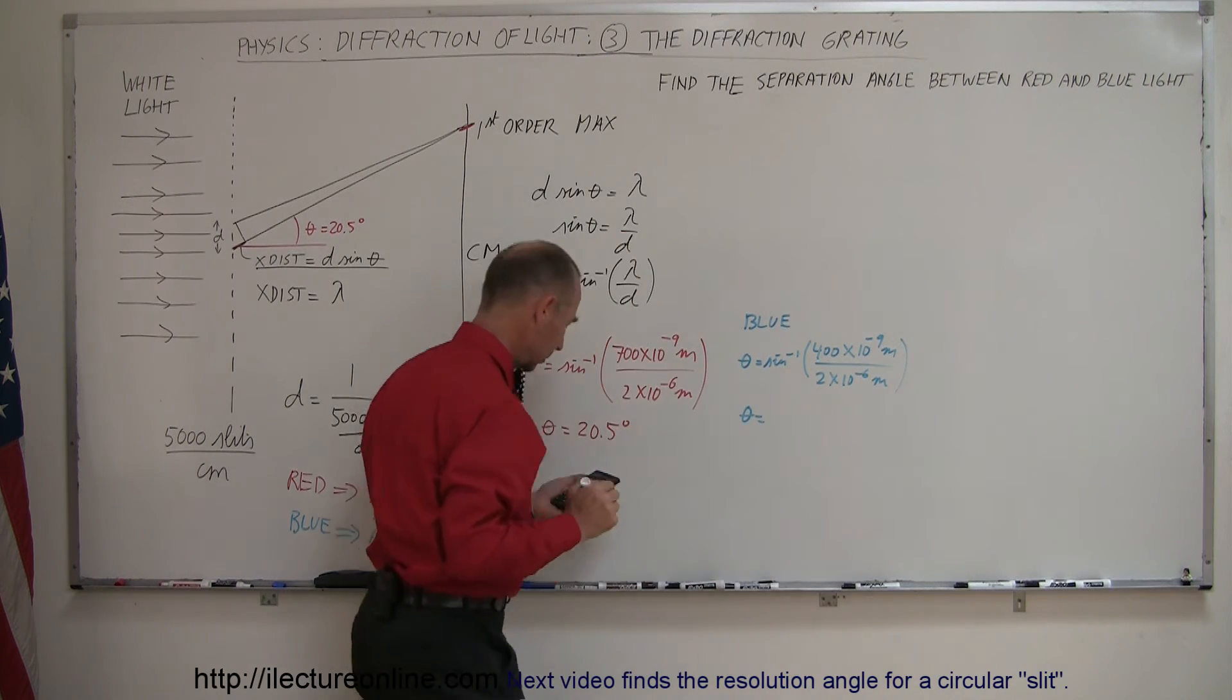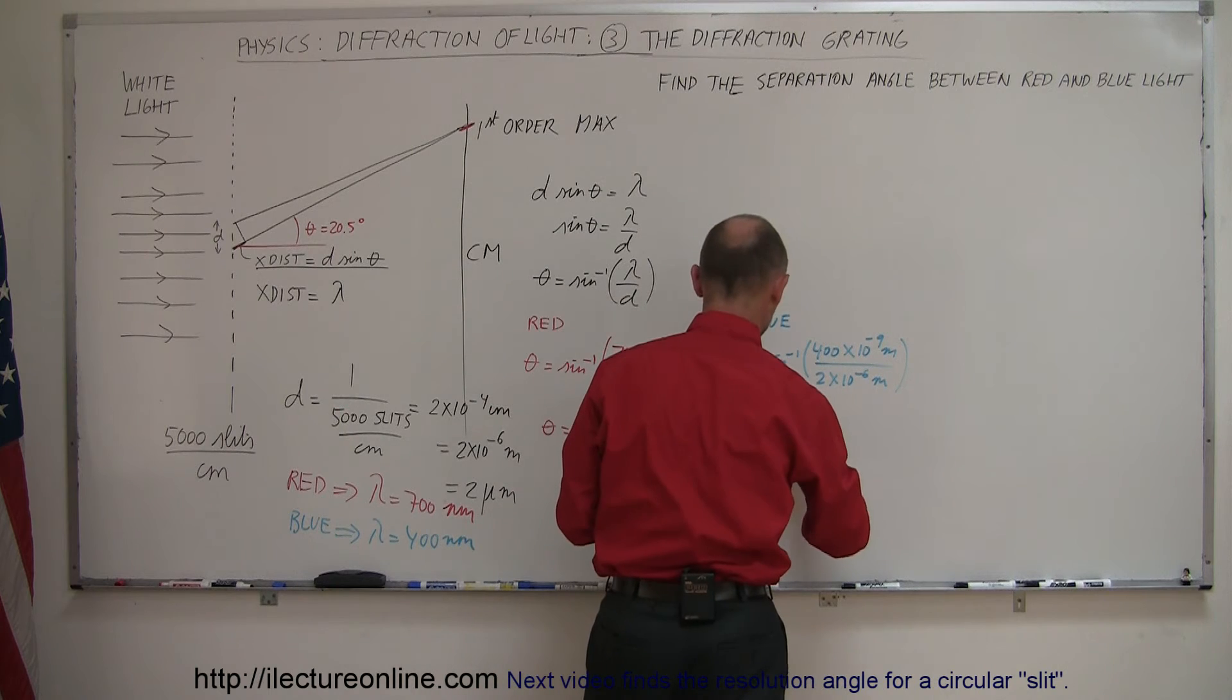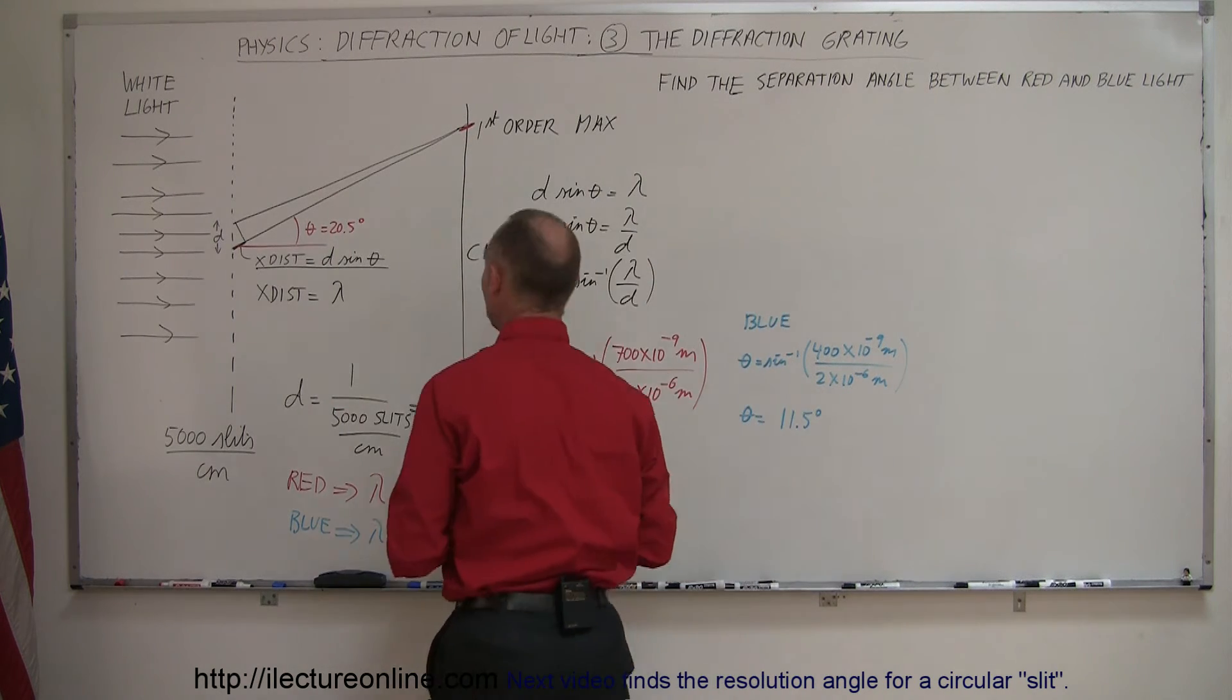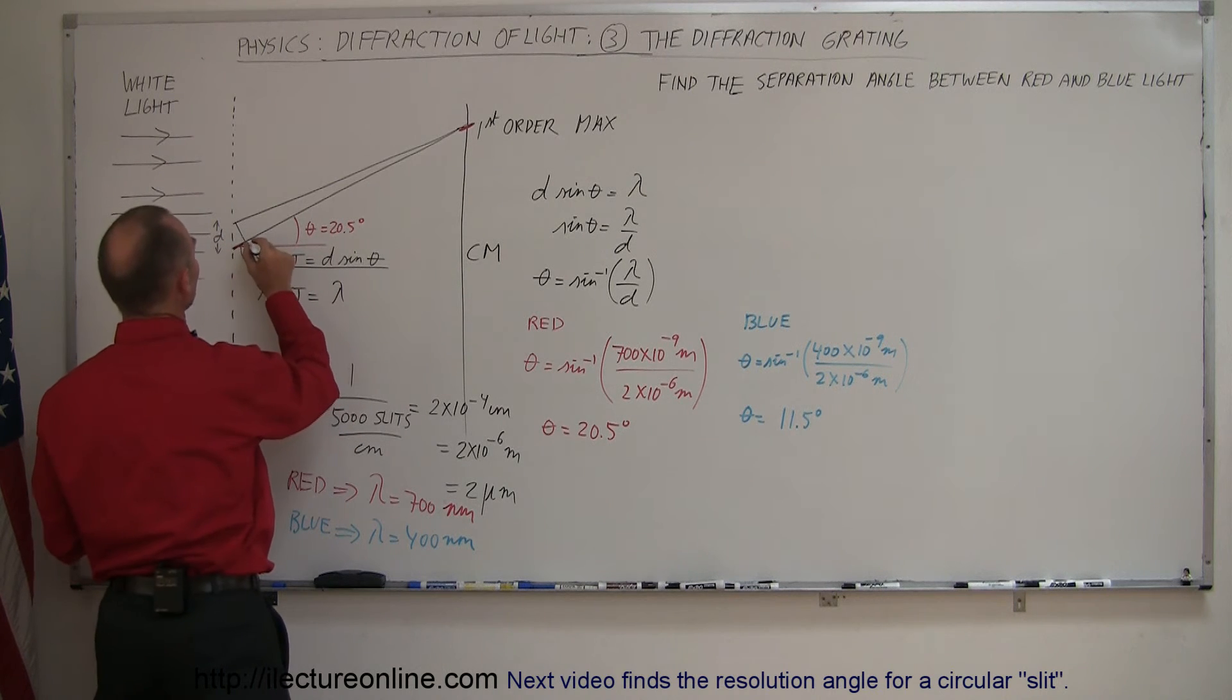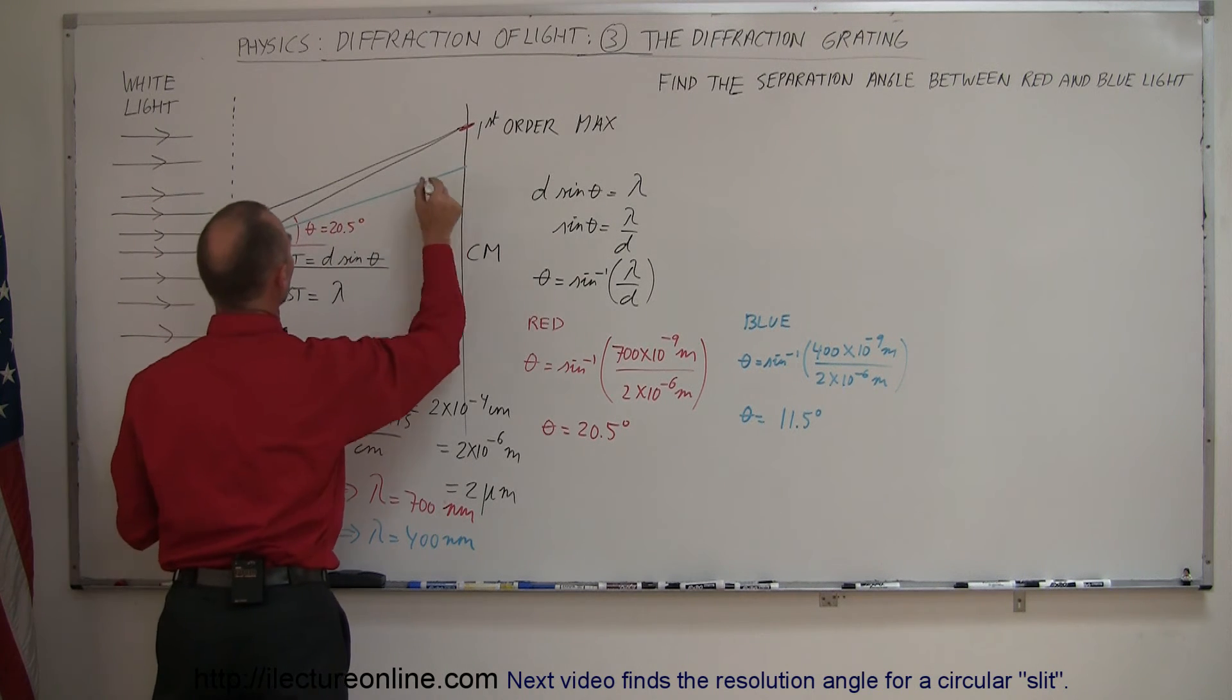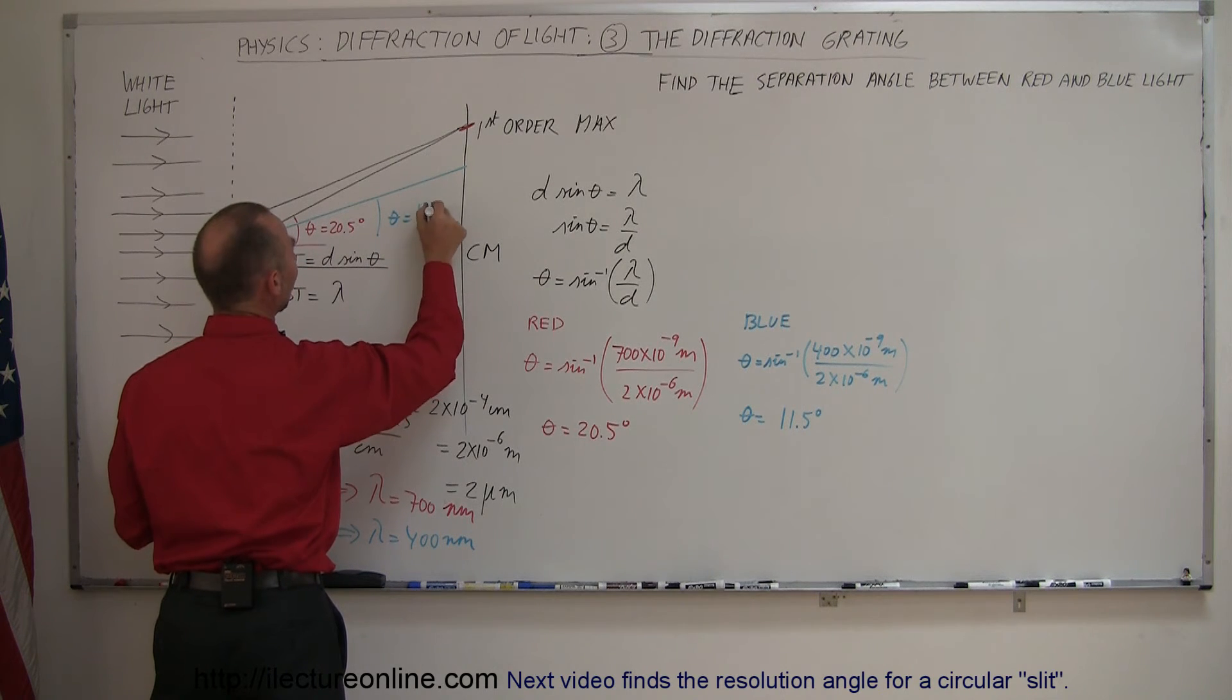And theta therefore is equal to 11.5 degrees. Means in the very same order, the maximum light, the angle for blue light is not nearly as large. So theta is equal to 11.5 degrees.